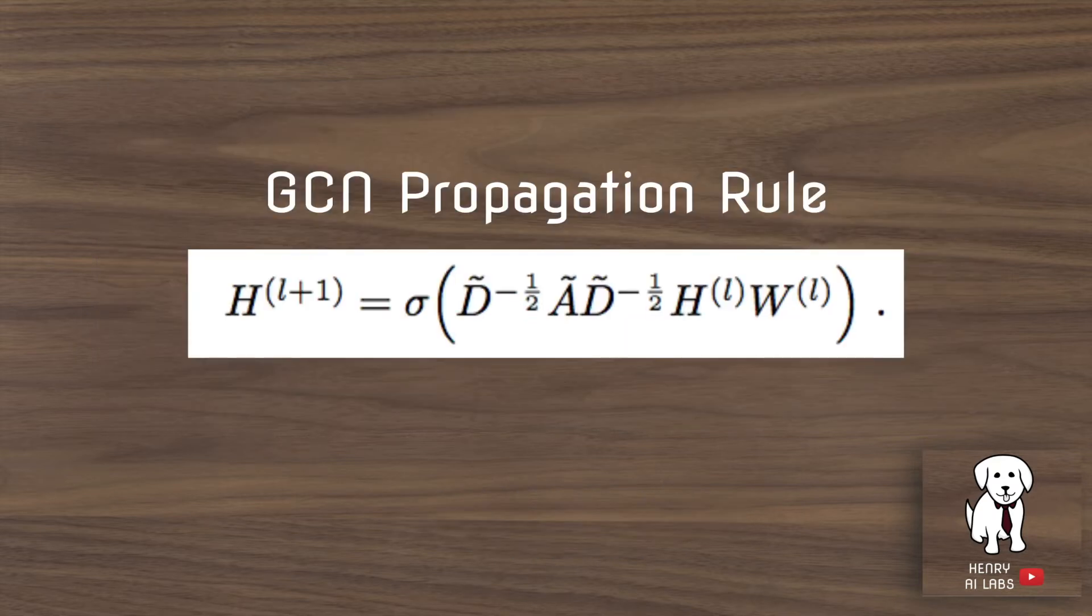So this is the key idea in the GCN, the GCN propagation rule. So what this says is H to the L plus 1, the hidden features at the next layer, are defined as being a nonlinear activation by this DAD term, which we'll discuss in the next slide, times the previous layer activations times the weight matrix for this layer.